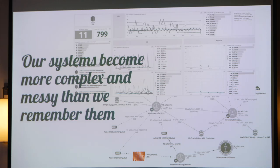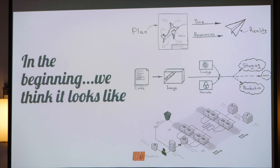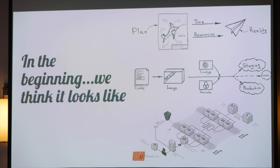Our systems have become more complex and messy than we remember them. As a chief security architect, I used to have data architects and solutions architects for the same system come to me with different diagrams — that's their mental model of the system. In the beginning when we're designing a system, we love to think things are very simple: a three-step process with code, standard image, prod and staging, and nice 3D diagram representations. But our systems actually slowly grow beyond our ability to understand what they're doing.